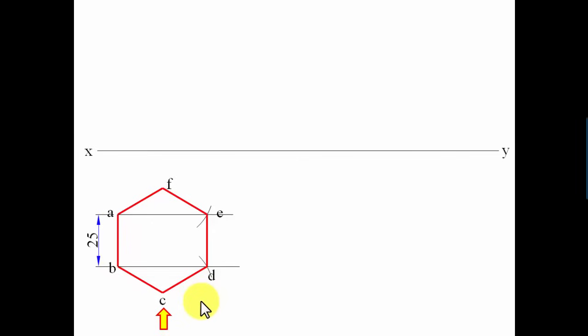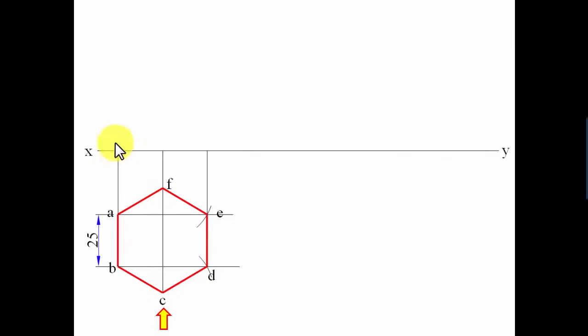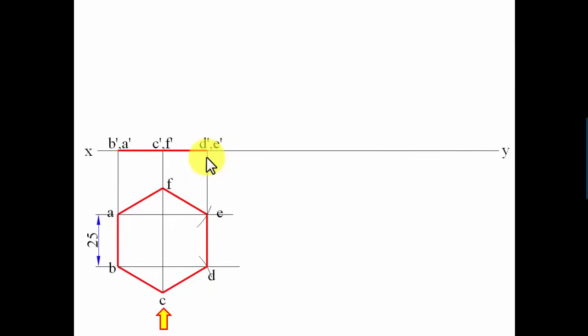Now let's look at this from the front. Since it is entirely resting on the horizontal plane, its front view lies on the XY line. This gives us B-dash, A-dash; then C-dash, F-dash; and D-dash, E-dash. Join them, and step one is complete — we've assumed the surface is resting on HP and drawn both its front and top views.